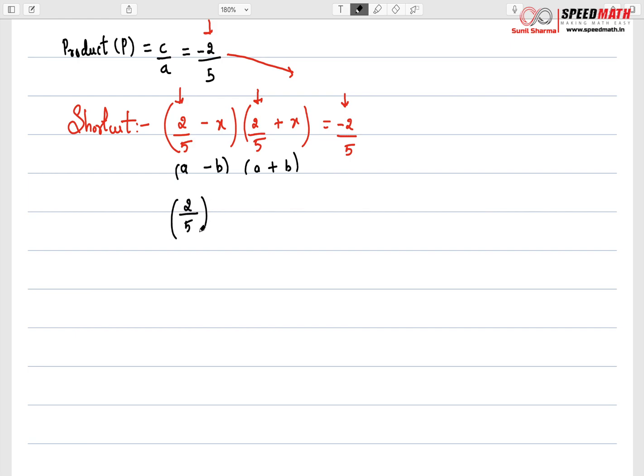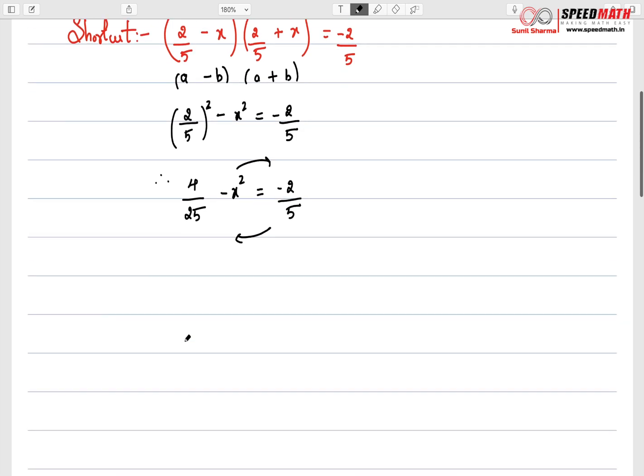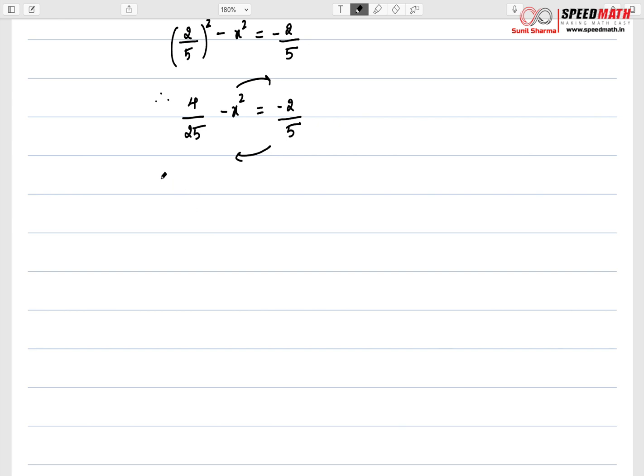So that will be (2/5)² in first bracket. And then x² and this term will remain as it is. This will give you very simple 4/25 - x² = -2/5. Now what we are going to do, we are going to take this -x² on that side and -2/5 on this side. So 4/25 + 2/5, when you get this term over here, this negative turns out to be positive and this -x² when it goes on the other side becomes positive x².